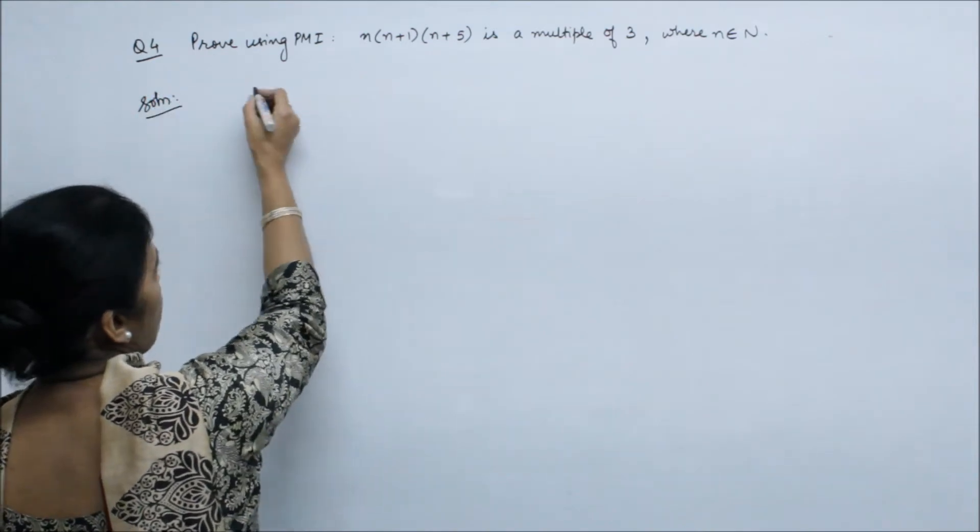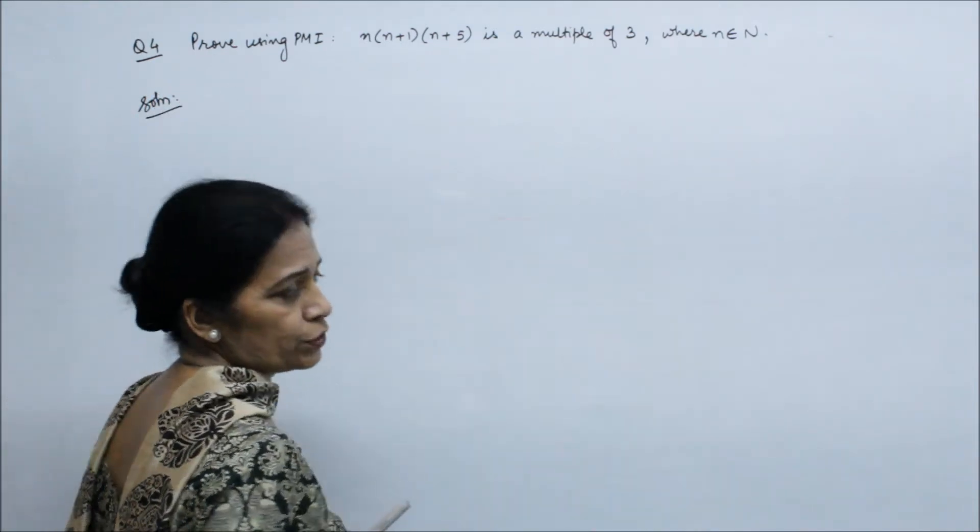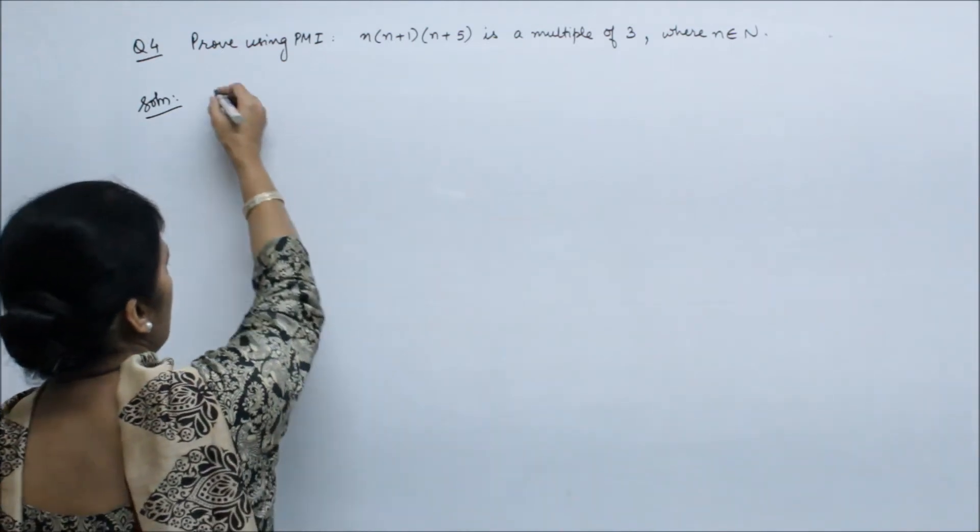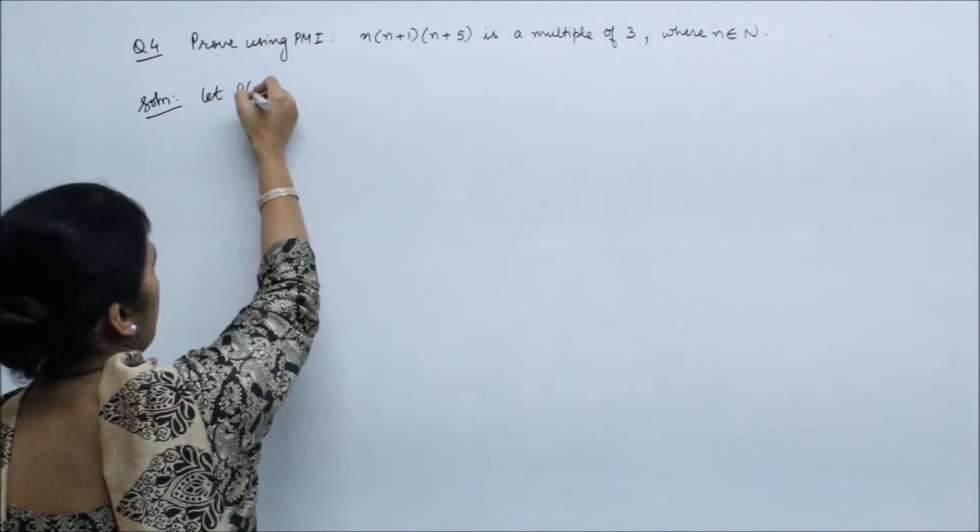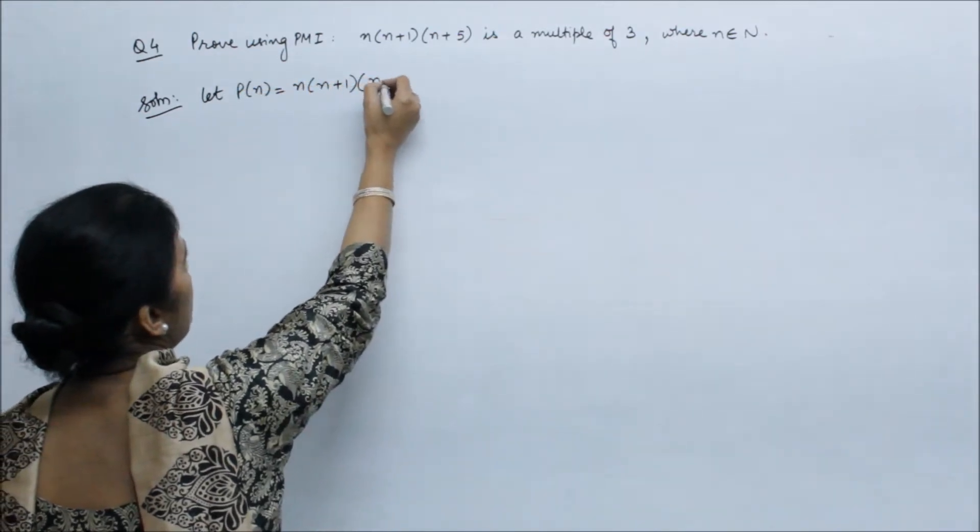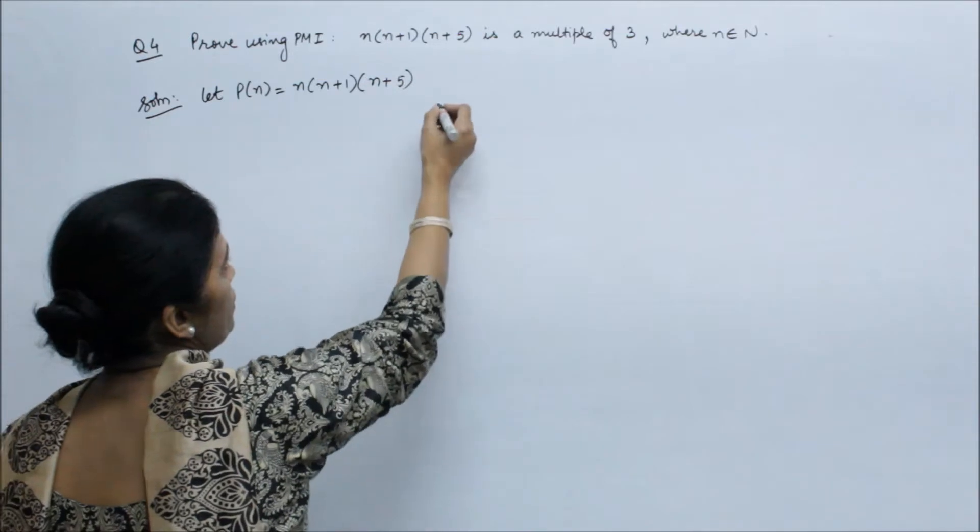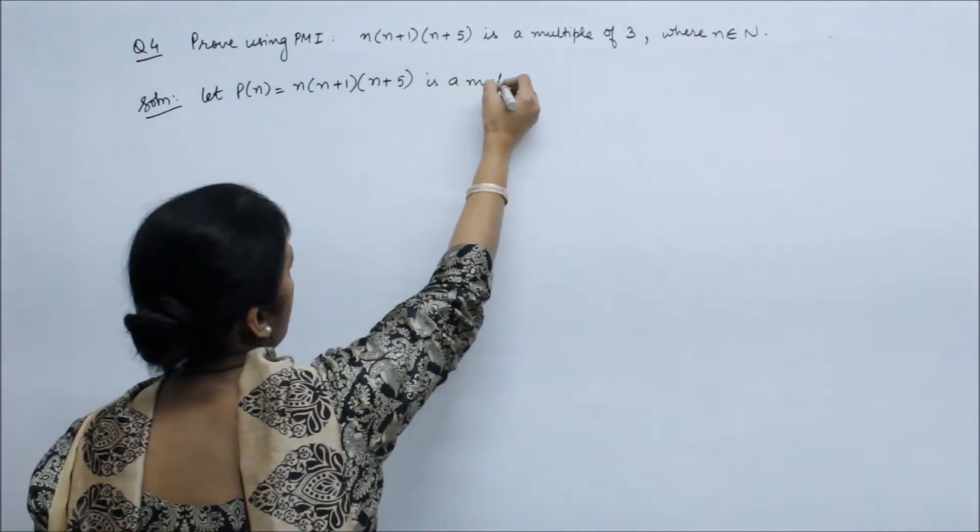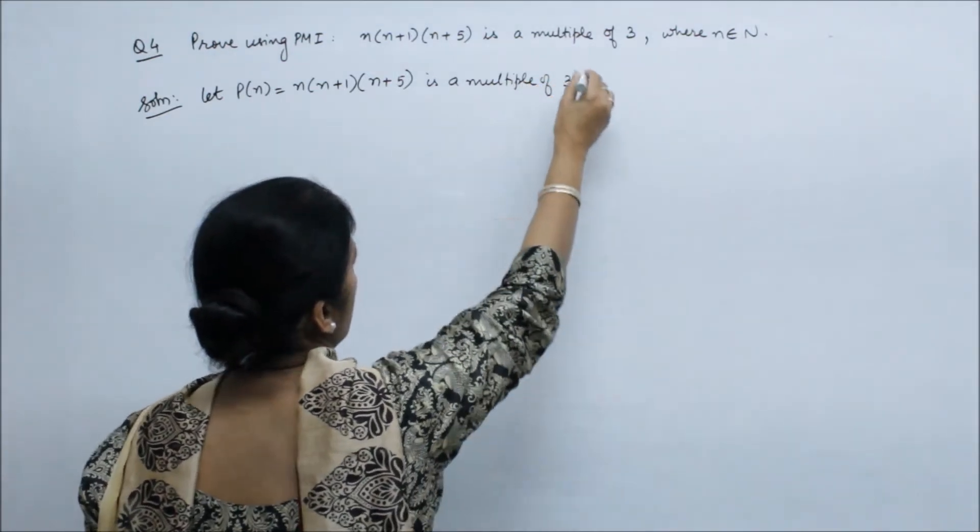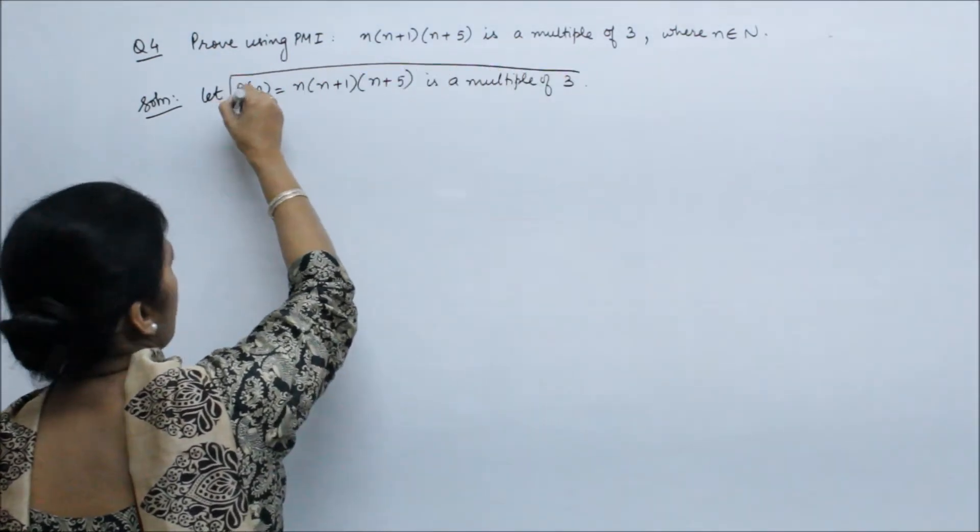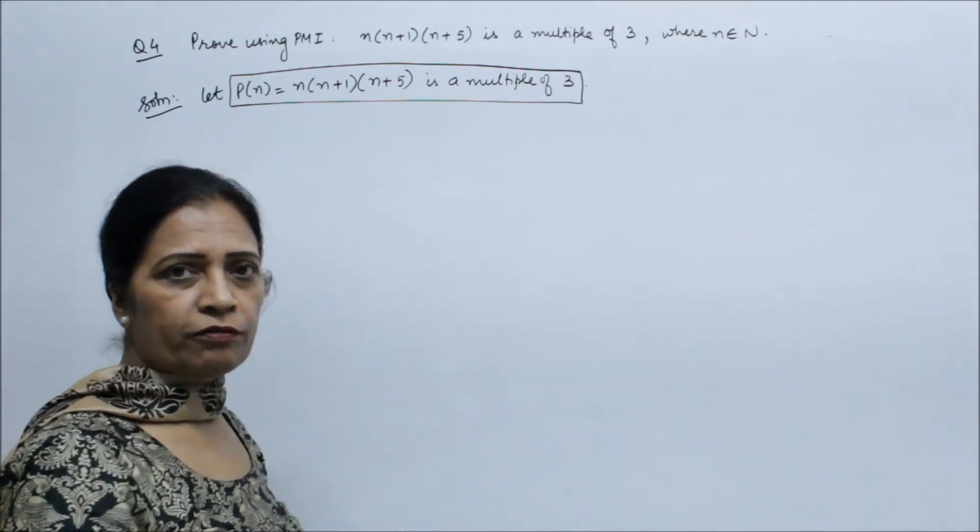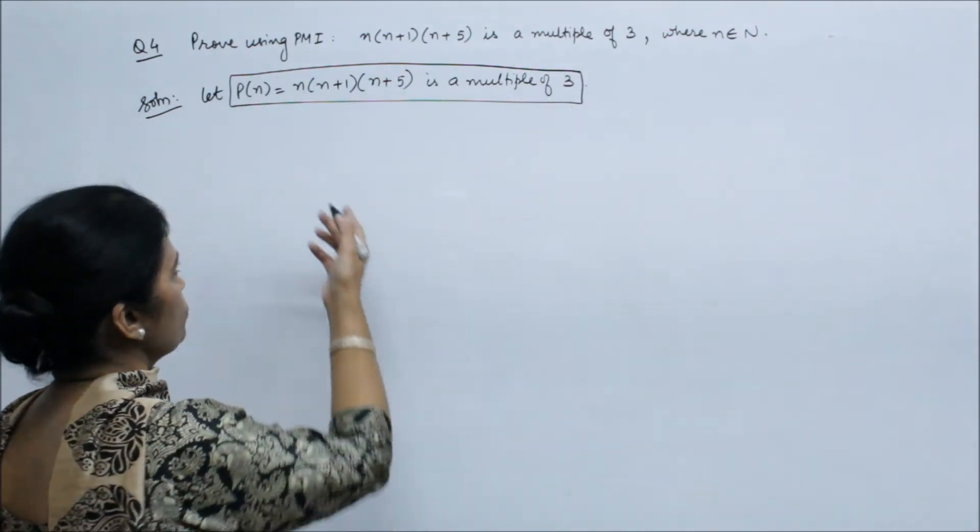So we start with whatever equation is given, we have to assume first. Let P(n) be n into n plus 1 into n plus 5 is a multiple of 3. First we have to assume this equation, this statement we have to assume P(n).